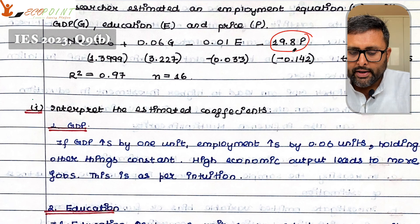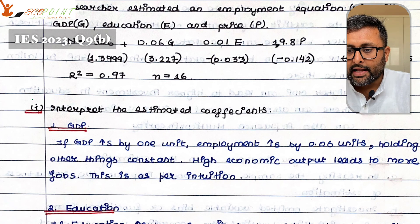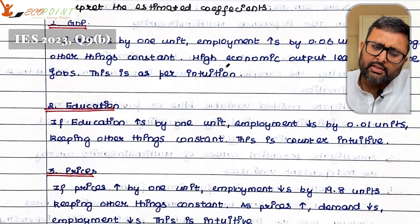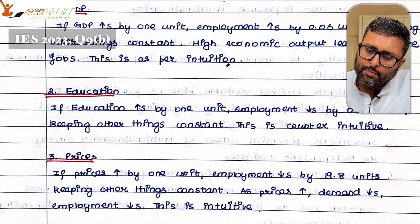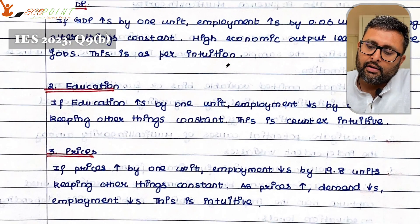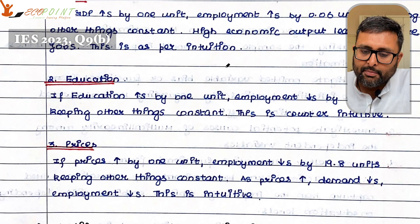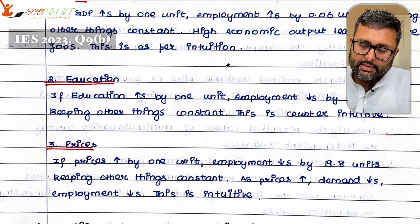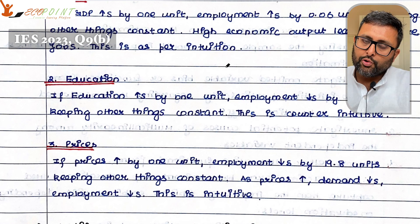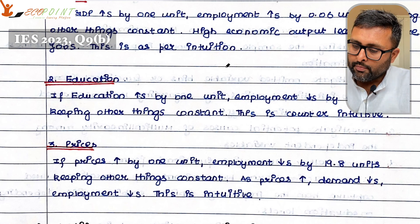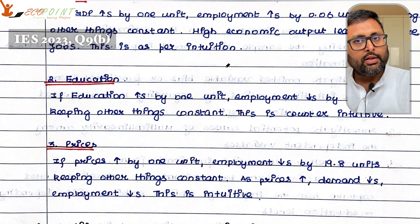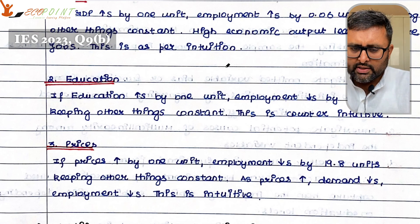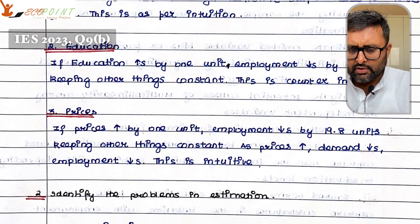If prices increase by one unit, then employment is going to fall by 19.8 units. This could be said to be intuitively right. Why? Because if prices are going to increase, then demand is going to fall. If demand falls, then employment is going to fall. So this is intuitive — completely fine.